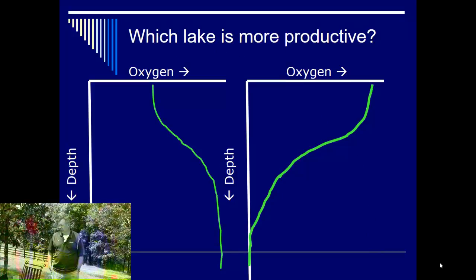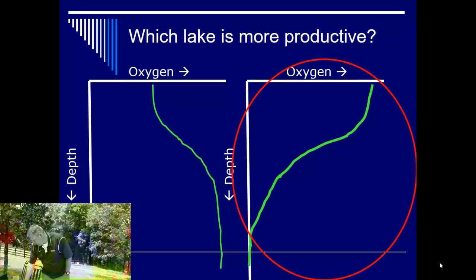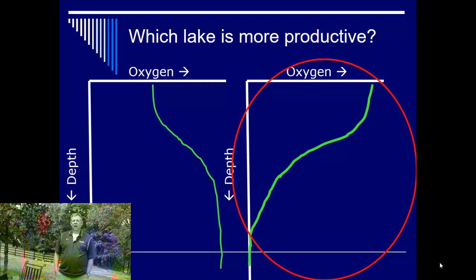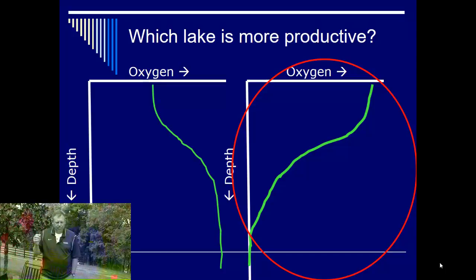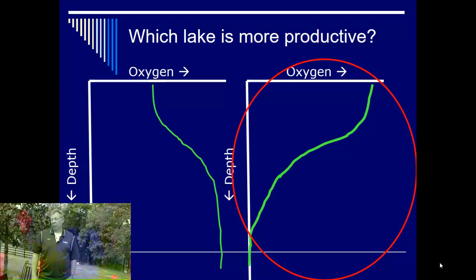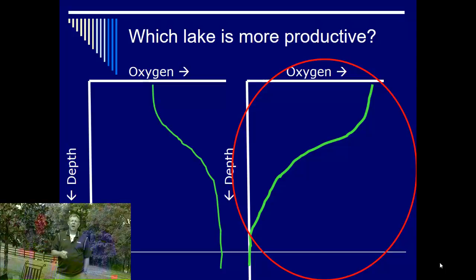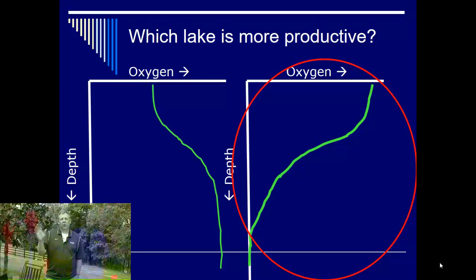The question is: which of these lakes is more productive? The Clinograde curve is a more productive lake — it's producing a lot of oxygen at the surface, things are dying, lots of biomass sinking to the bottom where it gets consumed and uses up oxygen. The orthograde lake doesn't produce a lot of oxygen, doesn't produce a lot of biomass, and there's not a lot of decomposition. In oligotrophic lakes, the oxygen profile is defined more by physical chemistry — the cooler water in the hypolimnion can hold more oxygen than warm water, so temperature is driving the oxygen curve. In more productive eutrophic lakes, it's the biology — the phytoplankton and bacteria — that are driving the oxygen curve.